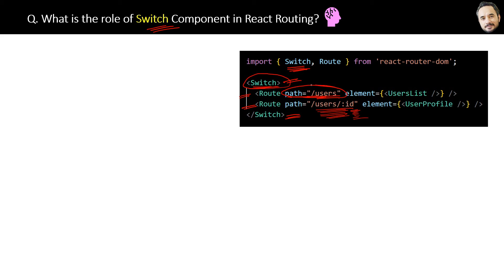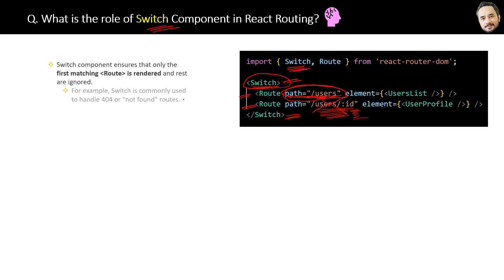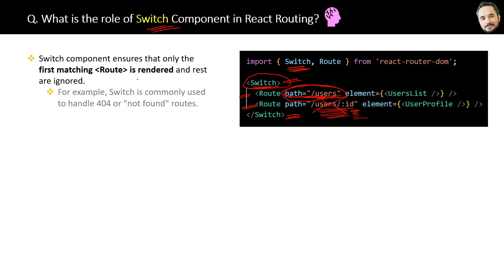Switch will execute only the first matched route and ignore the rest — that is the use of the Switch component. The same definition has been written here for later reference. Switch is also commonly used to handle 404 or not-found routes.